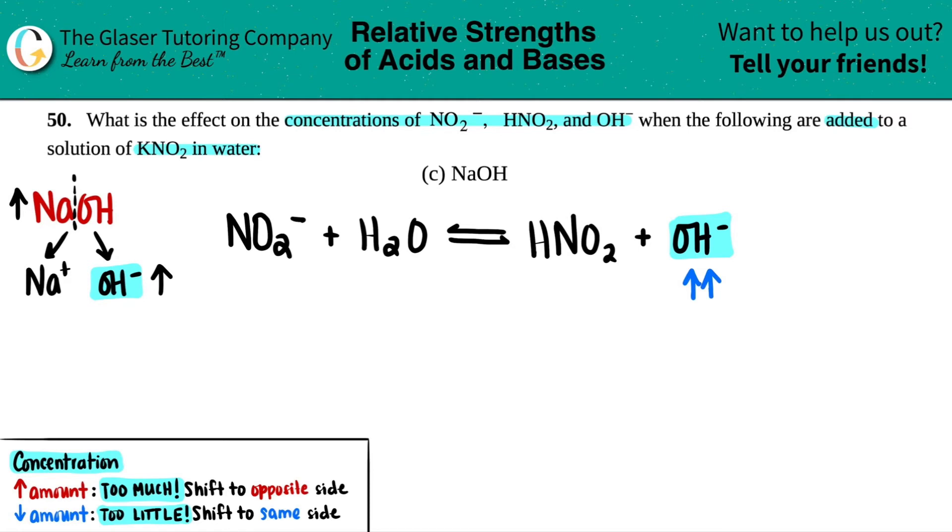Now let's just write out what we have to do. We have to find out what the effect of the concentrations of these three species are. So for NO2 minus, I need to know what's going on with that. I need to know what's going on with the HNO2. And I need to know what's going on with the OH minus.